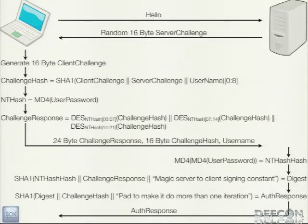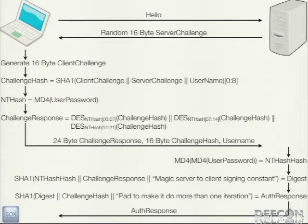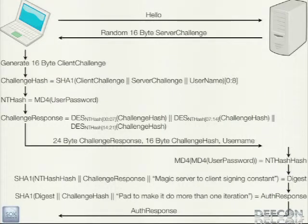Then calculates SHA1 of the NT hash hash, the challenge response, and the literal string 'magic server to client signing constant.' Then calculates another SHA1 hash of the previous digest, the challenge hash, and the literal string 'pad to make it do more than one iteration.' And then sends that back to the client. You get the feeling that maybe the designers didn't know this was going to be public one day.